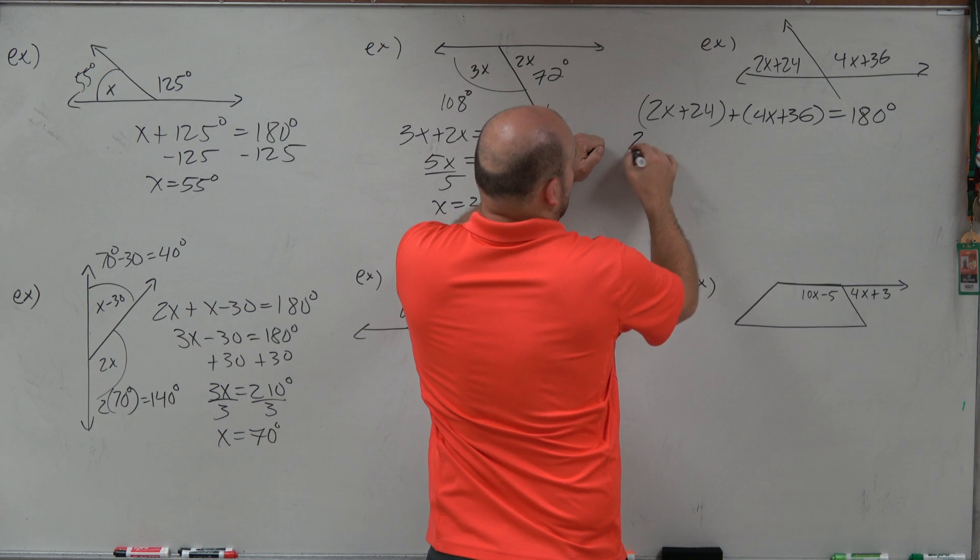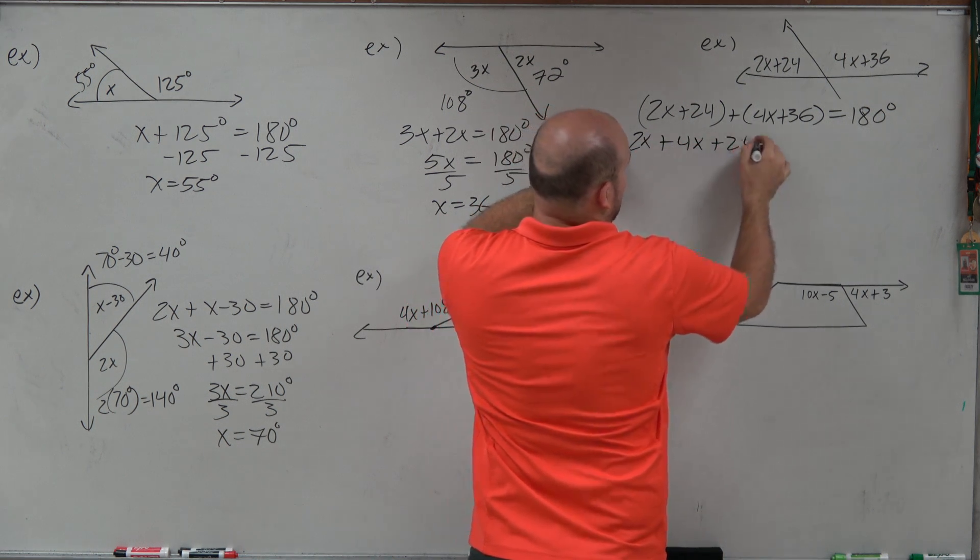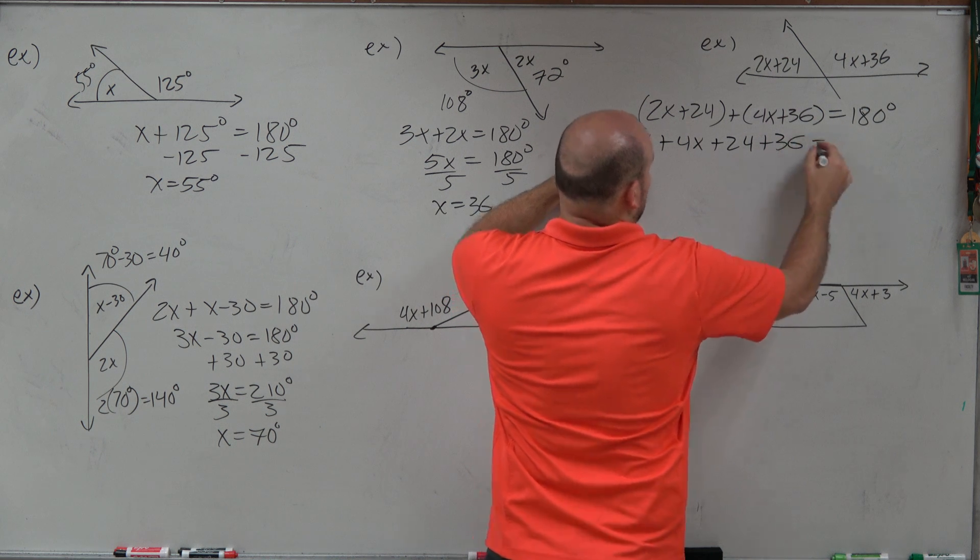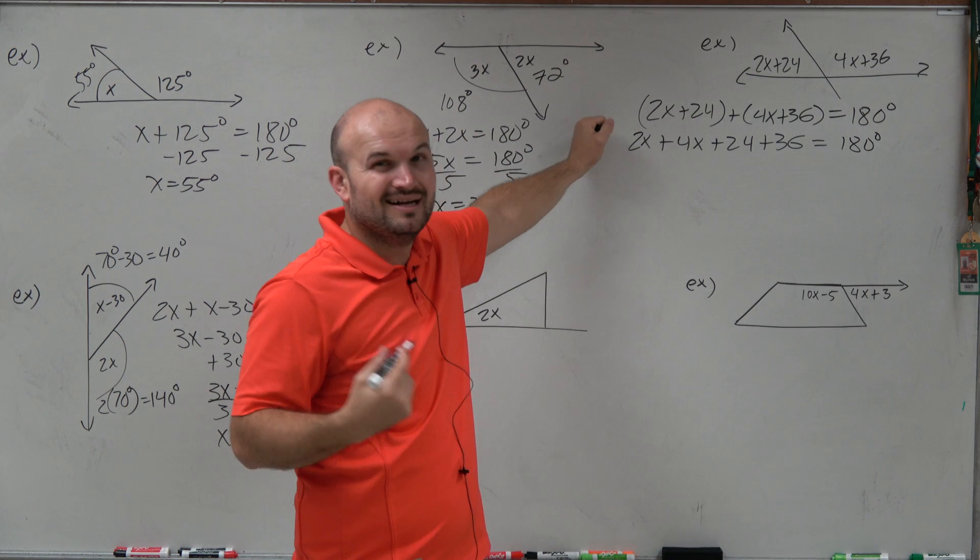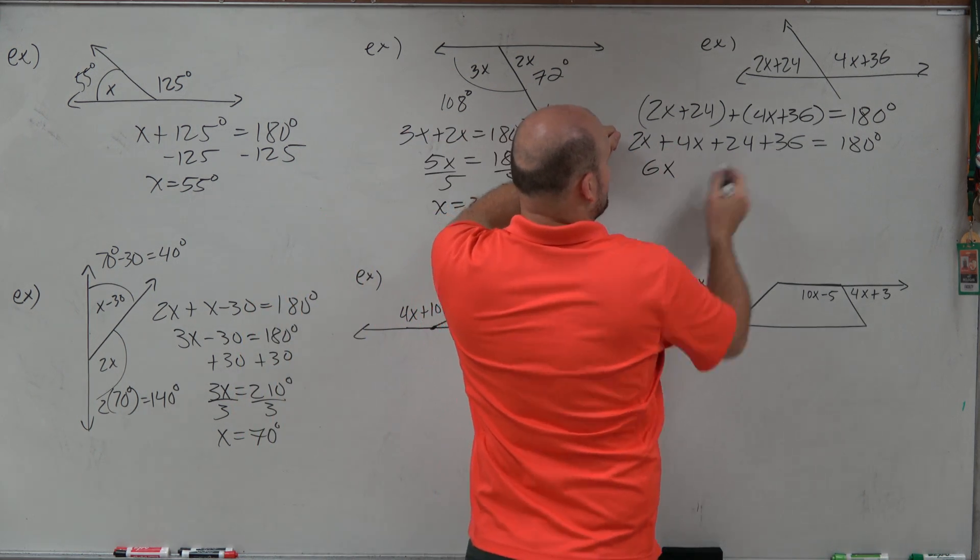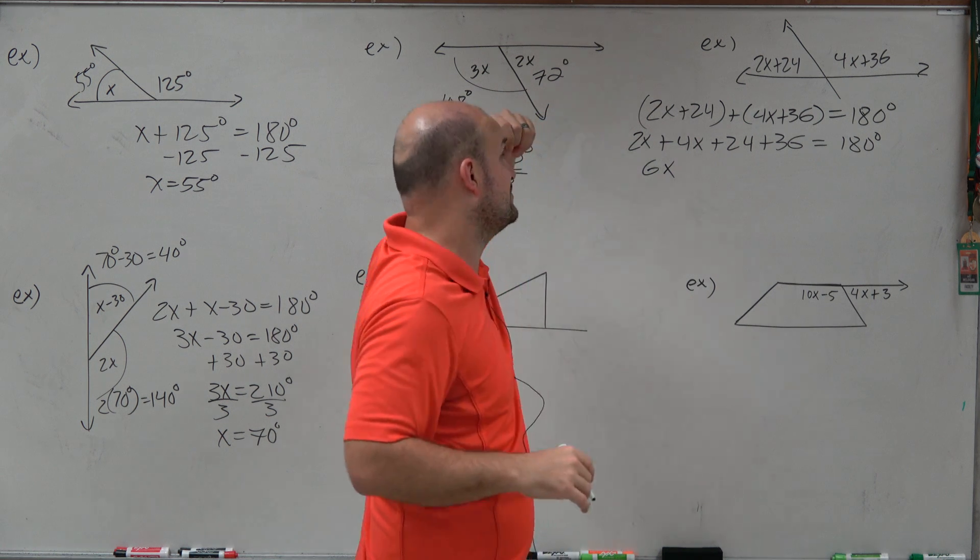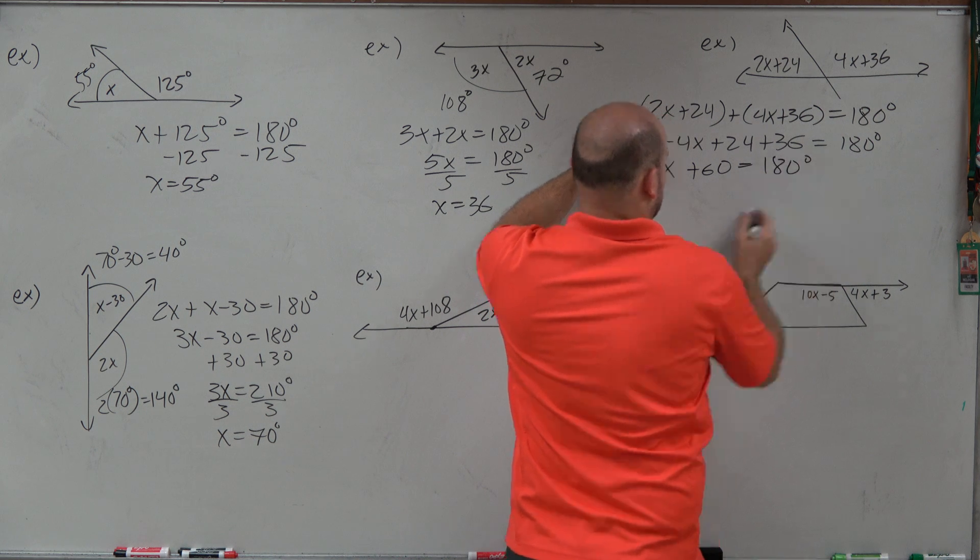Then I could also re-write, combine my, or just re-write, re-group them. So therefore, my numeric expressions are together, and my algebraic expressions are together. Now it's much easier to say 2x plus 4x is going to equal 6x. 24 plus 36 is going to be 60 equals 180 degrees.